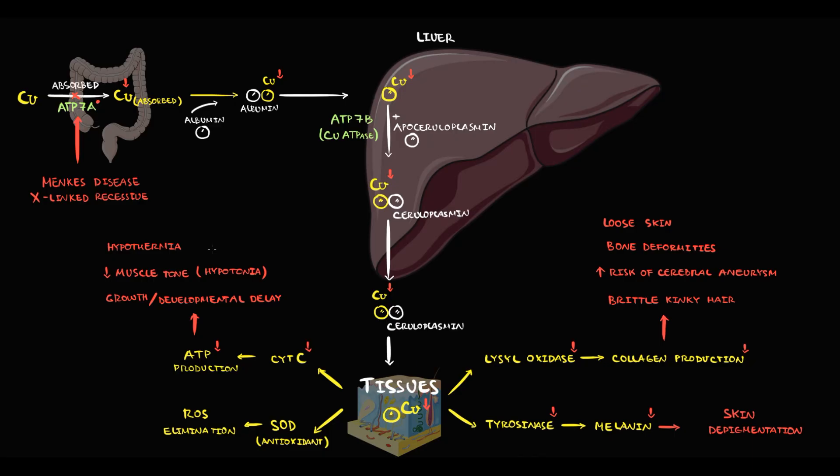And also without copper, superoxide dismutase cannot work, which means that we cannot eliminate free radicals. And accumulation of free radicals causes severe oxidative stress in tissues. And we have to know that in neural tissue, oxidative stress can cause neurodegeneration in gray matter of the brain, which will manifest as seizures.